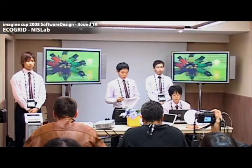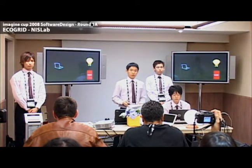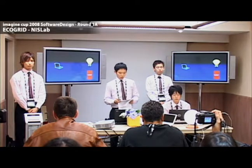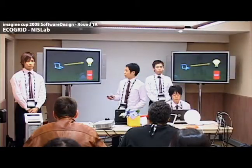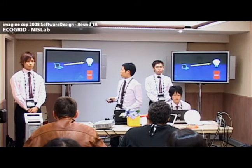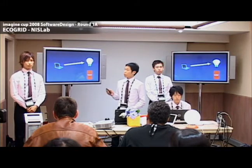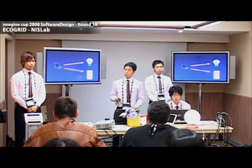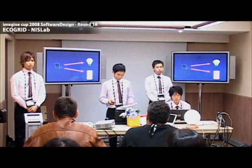The first feature is the auto control of home appliances. EcoGrid will automatically control your home appliances to minimize needless power consumption. For example, you can turn off the lights in your room or lower the heater or the air conditioner.